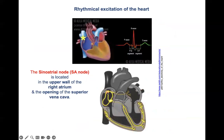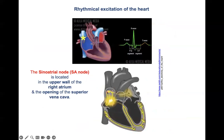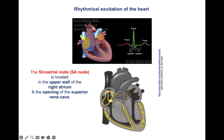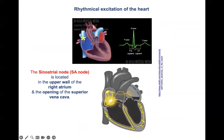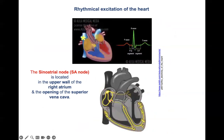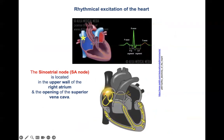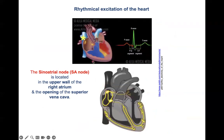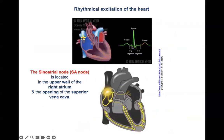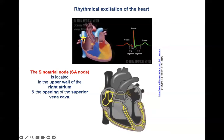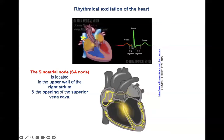The SA node has the highest intrinsic rate of impulses. It generates the first impulse, which is passed down to the heart following a strict hierarchy. The SA node is located, as indicated by the asterisk, in the upper wall of the right atrium at the opening of the superior vena cava.